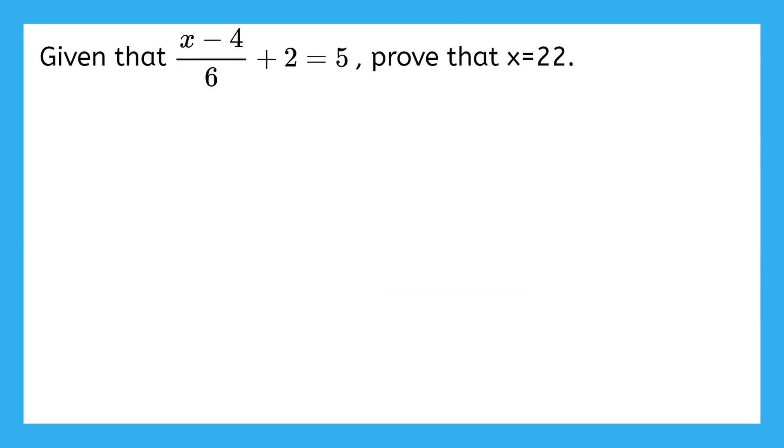Here we have the same equation as before, but now our problem says that given that x minus 4 over 6 plus 2 equals 5, prove that x equals 22. Anytime you're told that you need to prove something, that means you can't just solve it and present an answer. You have to provide a reason that justifies why you're allowed to complete each step in your problem solving.